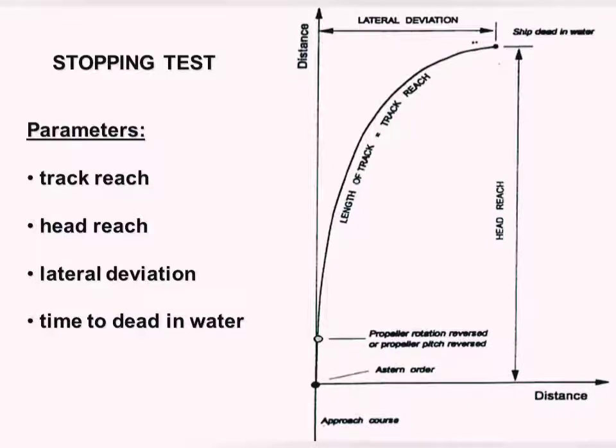Head reach means along the original heading of the ship, the vertical distance from the point the order was given to the point when the ship has stopped. Finally, the track is traced by the center of gravity of the ship, also called the midship position.